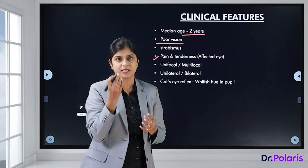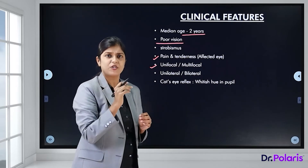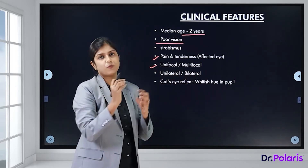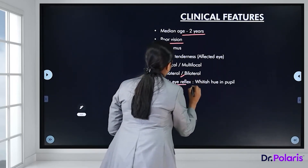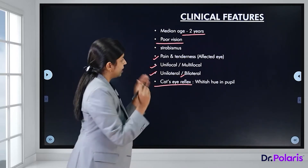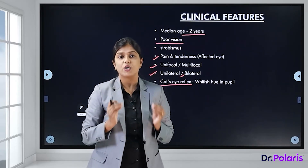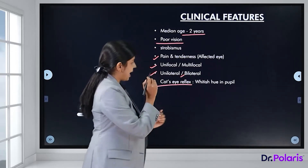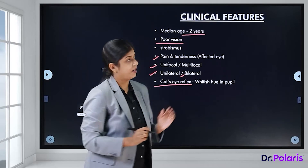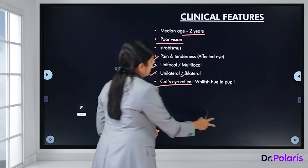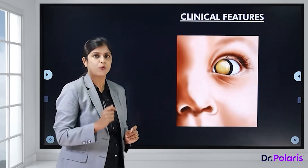Sometimes patients may present with proptosis, that is bulging of the eyeball. The tumour can be unifocal or multifocal, unilateral or bilateral. One very important finding is the cat's eye reflex — white tissue visible in the pupil resembling how a cat looks in the dark — also known as leukochoria, a characteristic feature of retinoblastoma.